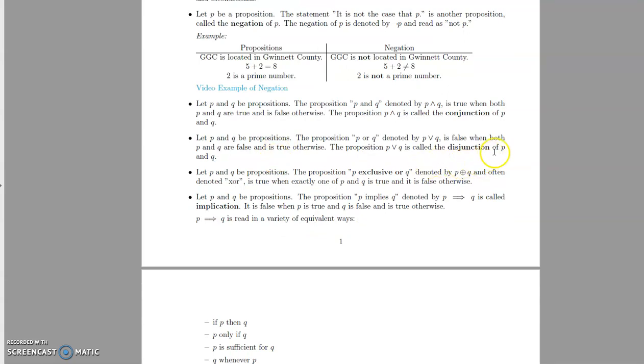The next logical operator is called the disjunction. Starting with two propositions P and Q, we form 'P or Q,' denoted with a V. The disjunction is false when both P and Q are false and true otherwise. This is the inclusive or — we include the possibility that both of them are true. In math, logic, and programming, 'or' is inclusive. For the exclusive or, we use a circle-plus symbol; the exclusive or is true when exactly one of P and Q is true and false otherwise.